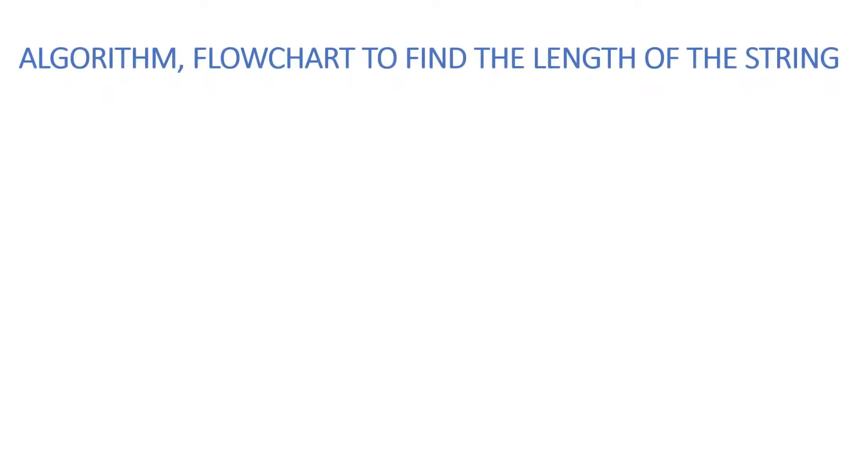Let us see the algorithm flowchart to find the length of the string. In the algorithm, we start from step 1. In step 2, we read the character array name which has maximum size 50. In step 3, length is assigned 0, and in step 4, I is initialized with 0.